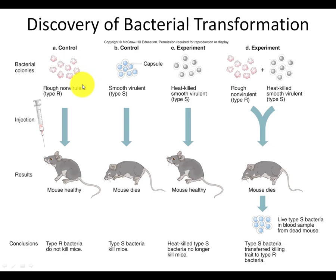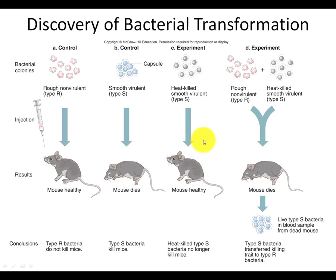In 1928, Frederick Griffith, an English microbiologist, worked with Streptococcus bacteria that causes pneumonia in humans. There are two strains: a smooth strain enclosed in a polysaccharide capsule, and a rough strain with no capsule. The rough strain is non-virulent — it does not cause pneumonia — while the smooth strain is virulent and can cause pneumonia. Griffith decided to do an experiment.